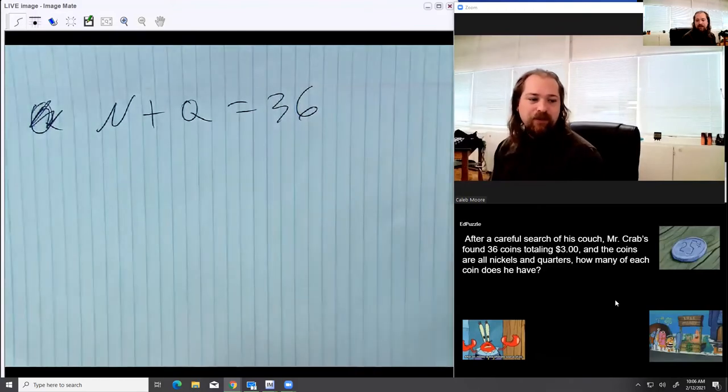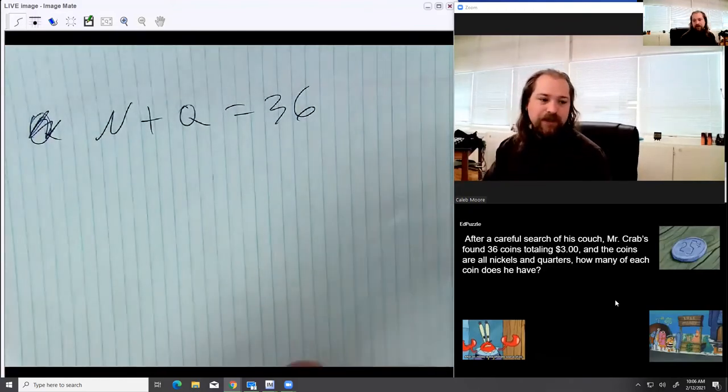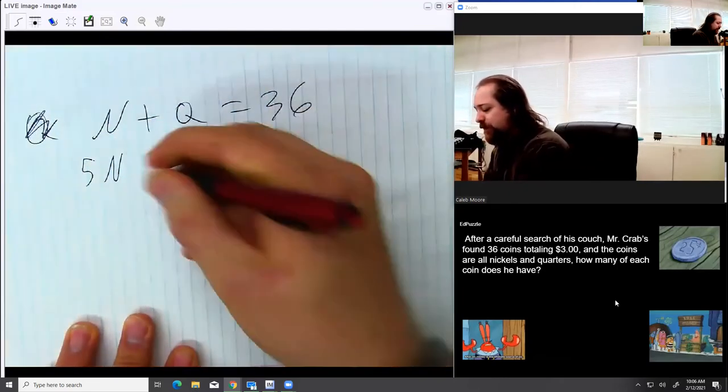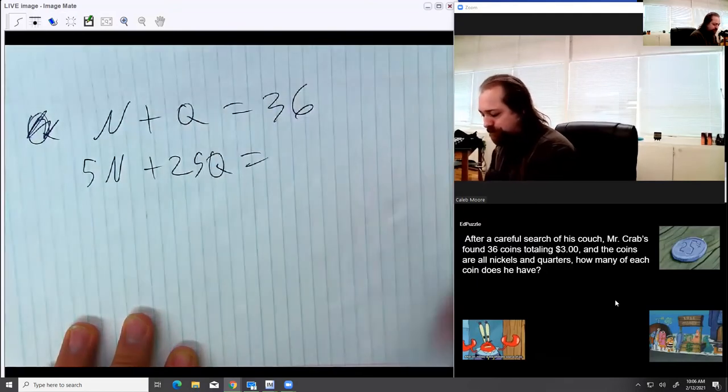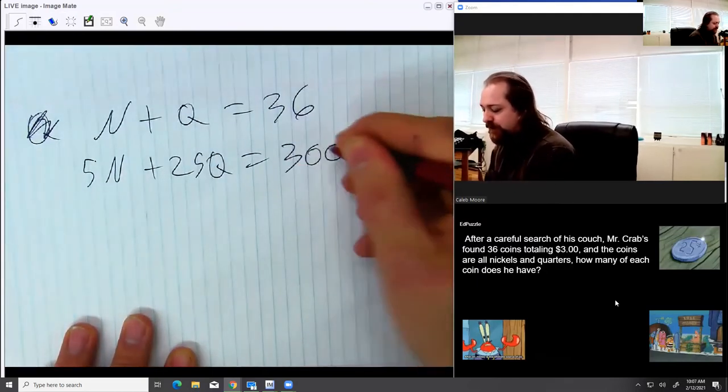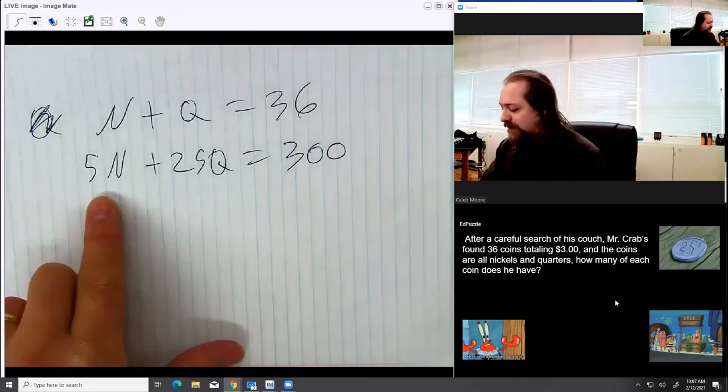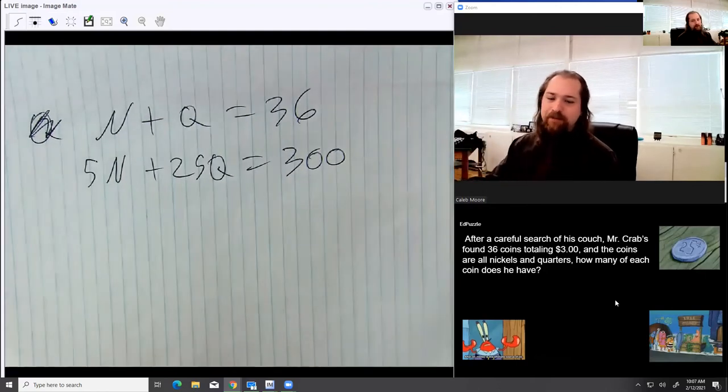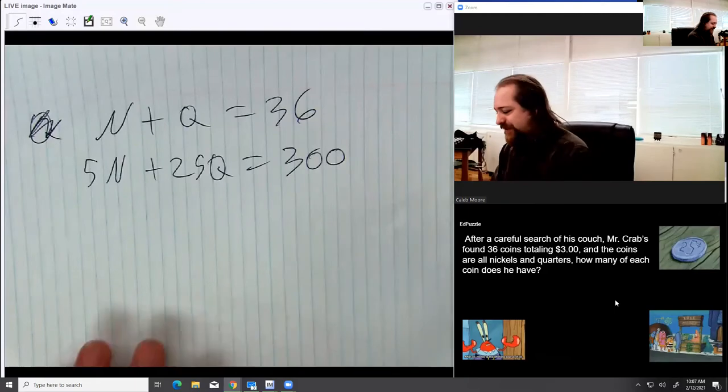And then, if we add the cost or the amount of each, we're going to get $3. $3 is actually 300 pennies. So 5 pennies plus 25 pennies equals 300 pennies. That just got rid of the decimals for me. So 5 cents a nickel, 25 cents a quarter. So looking at this, first step, we're going to cancel something out. But what's going to cancel? Nothing, because they're all matching.